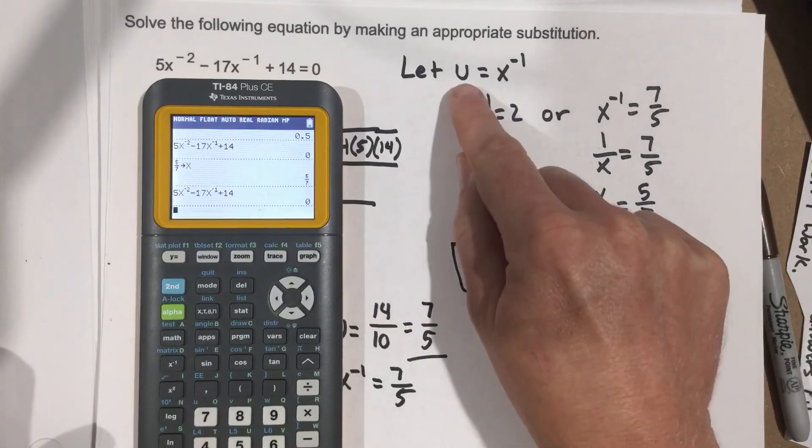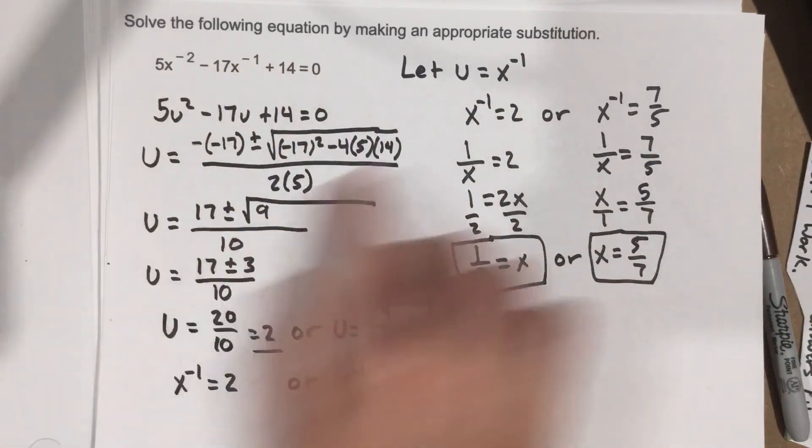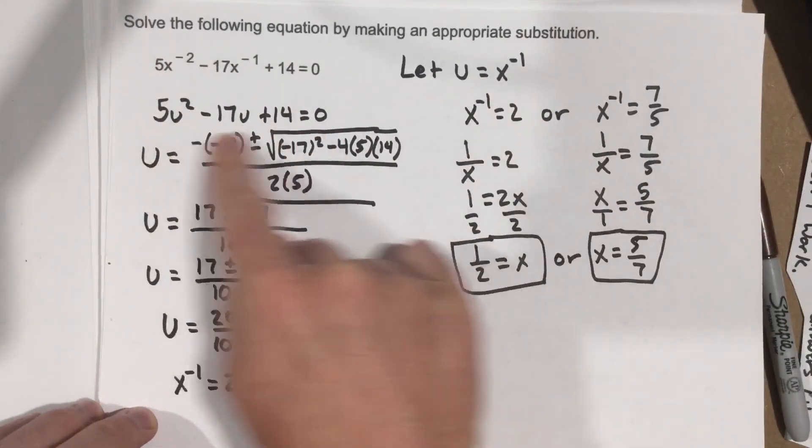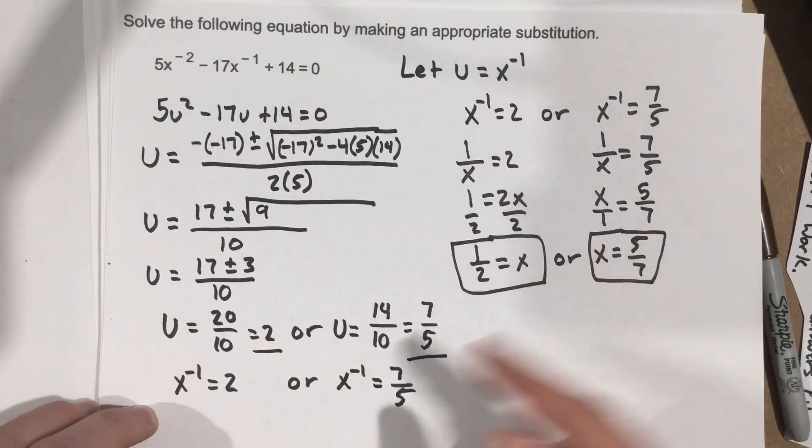And we use that little substitution there, u equals x to the negative 1, to get it to a quadratic form that we could solve. And then we just plug it back in at the end.